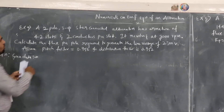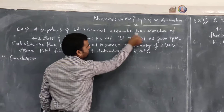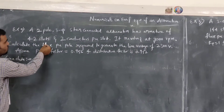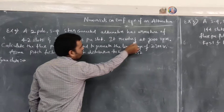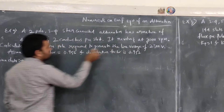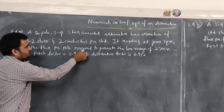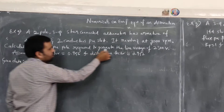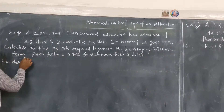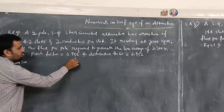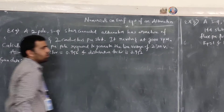The question is: a 2-pole, 3-phase, star-connected alternator has an armature of 42 slots and 2 conductors per slot. It revolves at 3000 rpm. Calculate the flux per pole required to generate a line voltage of 2300 volts. Assume pitch factor Kp = 0.956 and distribution factor Kd = 0.952.